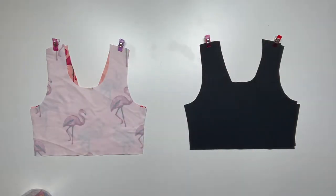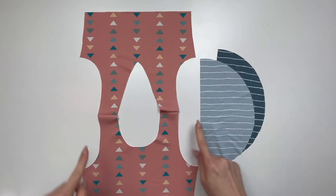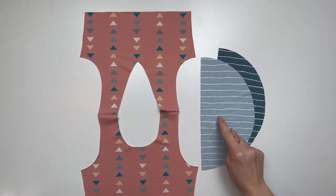Sew or serge to complete those seams. If you are adding a flutter sleeve to your bodice, this needs to be done now.